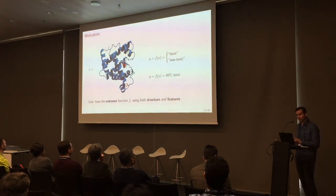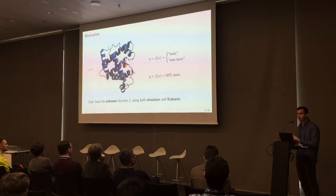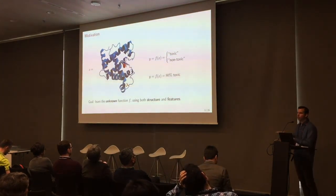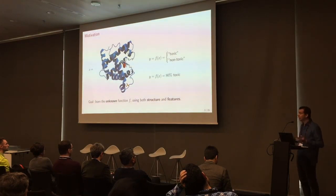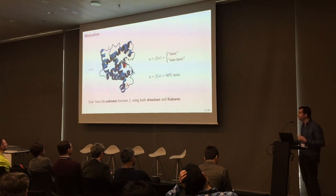What we want to do here is use those features — information about the nodes — but also exploit the structure among the objects. You don't only want to use age, profession, earnings, but also information about your friends. Just taking the average age of your Facebook friends is a pretty good predictor of your own age. The idea is to use not only information from yourself, but also from the other objects you're connected to.